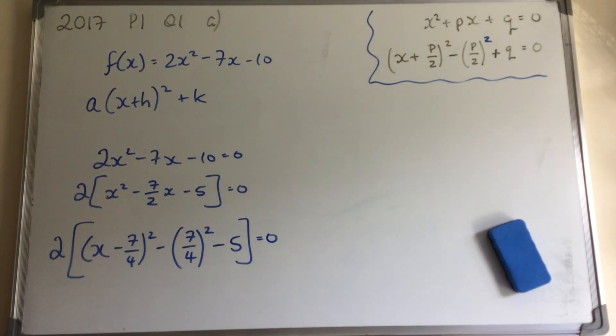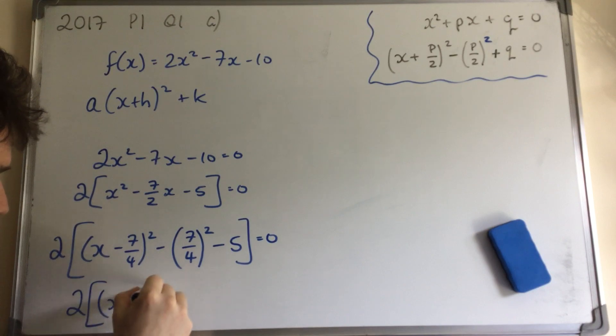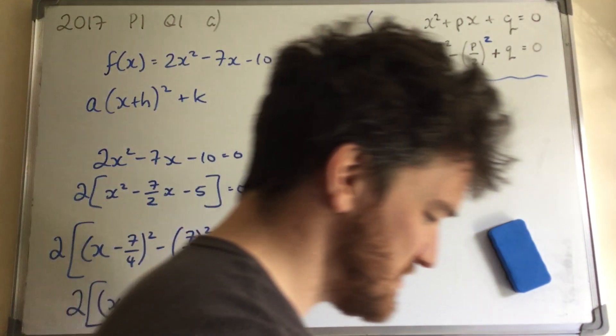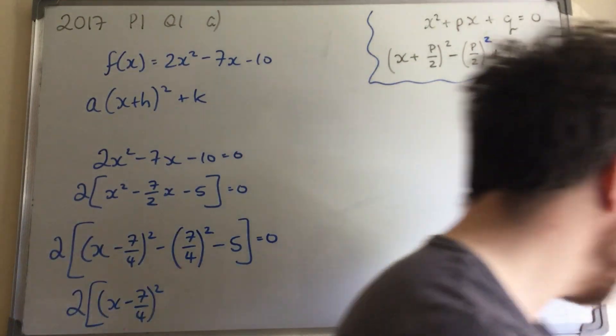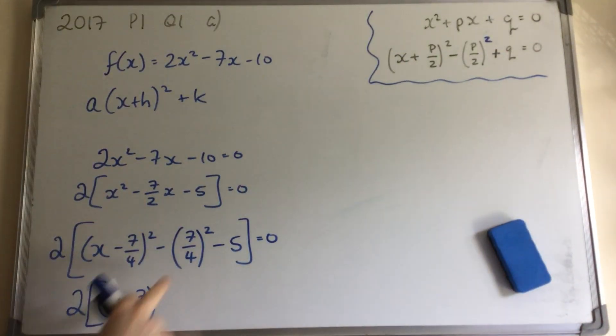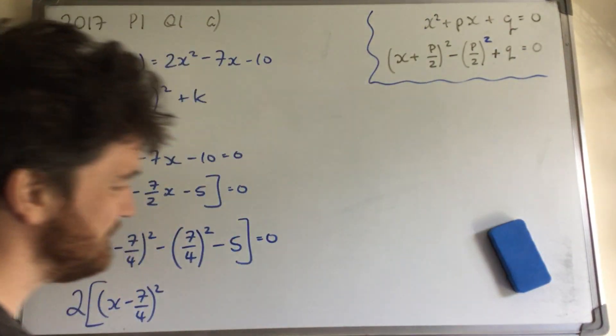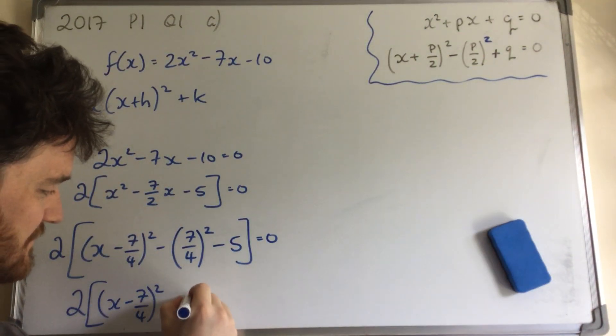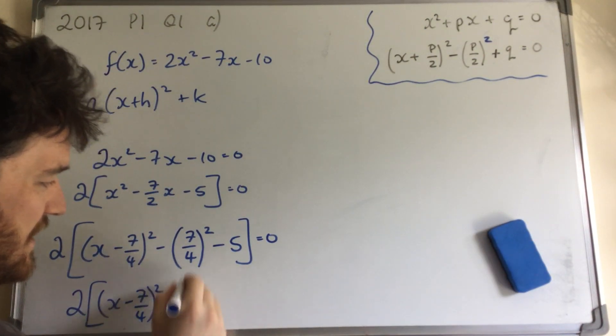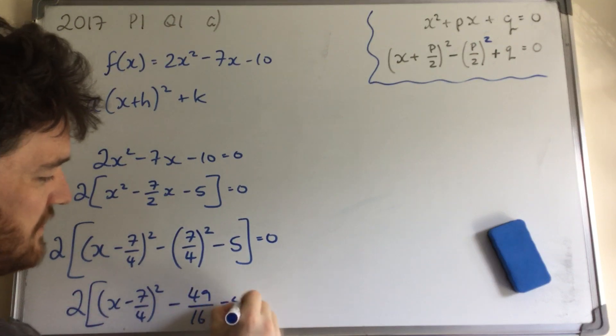So next I get 2 bracket. We leave this alone, because we are writing it in this form up here. Minus 7 over 4. So we're just going to grab our calculators. Well, it's 49 over 16. So it becomes 49 over 16 minus 5.